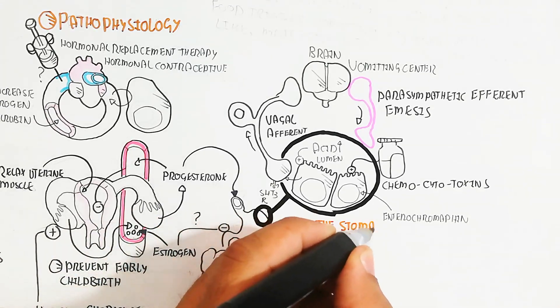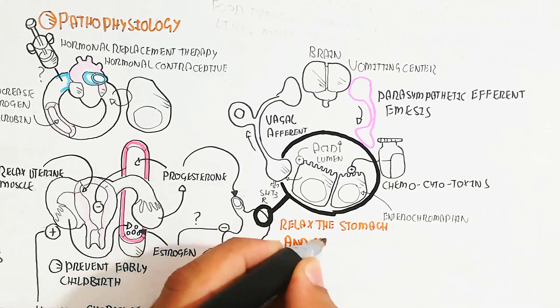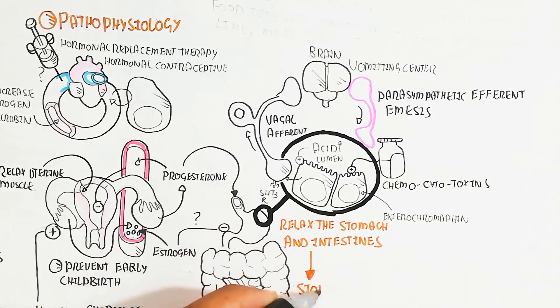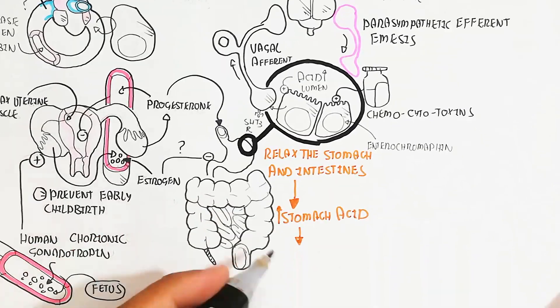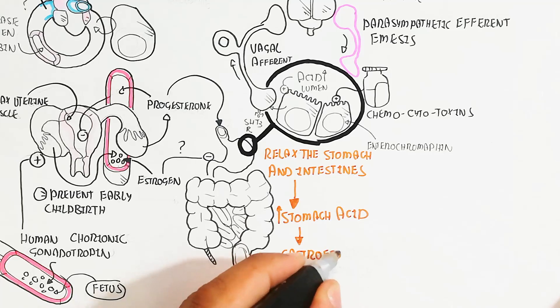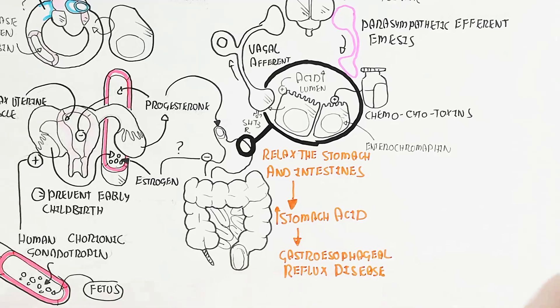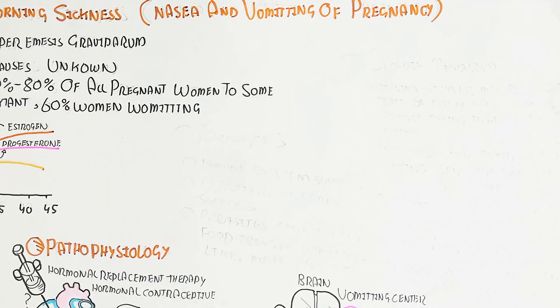The relaxed stomach and intestine smooth muscle leads to more stomach acid production and gastroesophageal reflux disease can be possible. It also leads to the parasympathetic efferent nerve causing the emetic reflex.